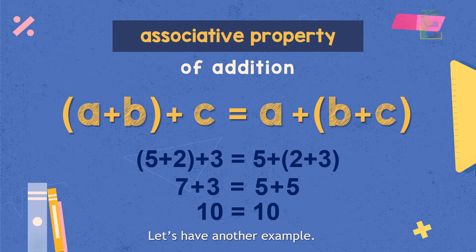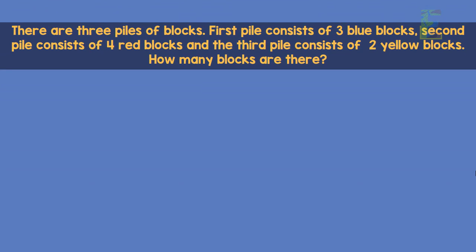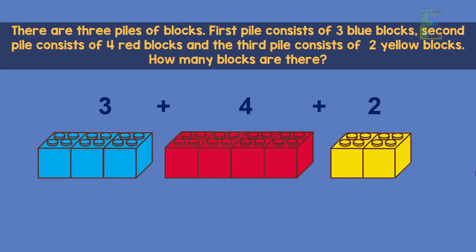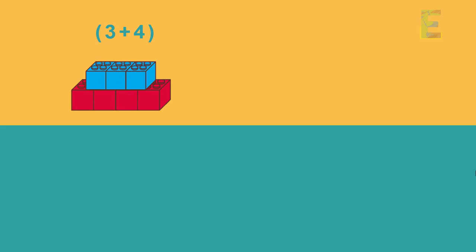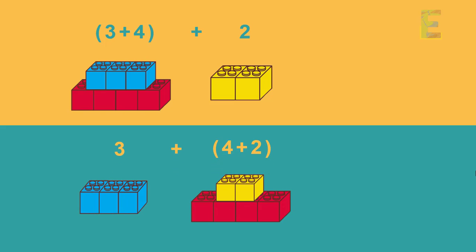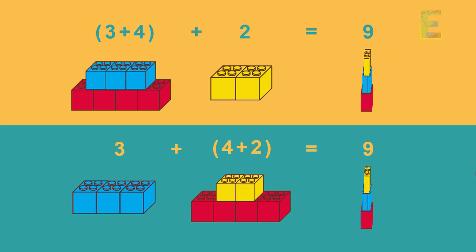Let's have another example. There are 3 piles of blocks: the first pile has 3 blue blocks, the second pile has 4 red blocks, and the third pile has 2 yellow blocks. How many blocks are there? By applying the associative property of addition, we can add the blue and red blocks first and then add the yellow blocks, or group them differently. Both will have the same answer.